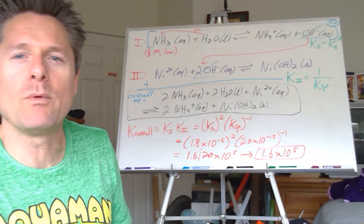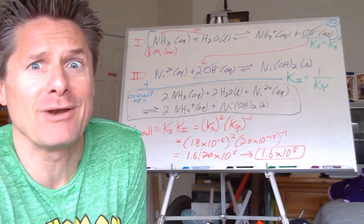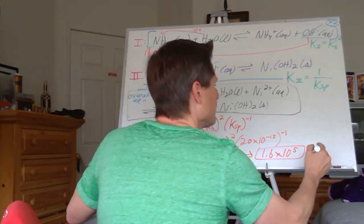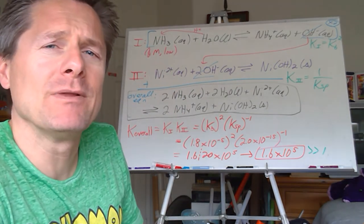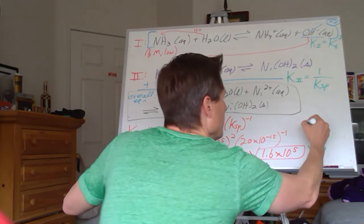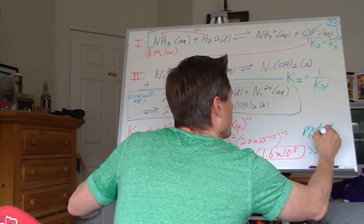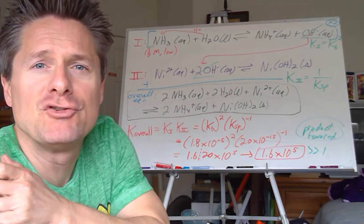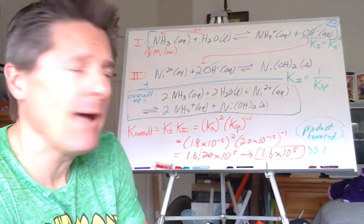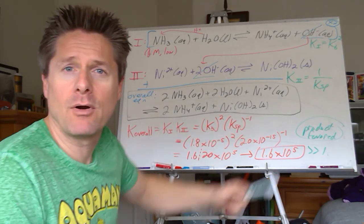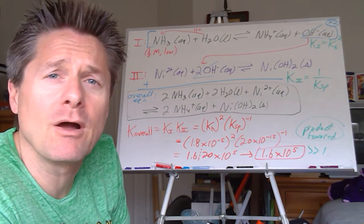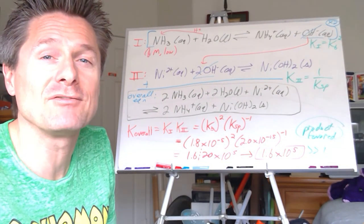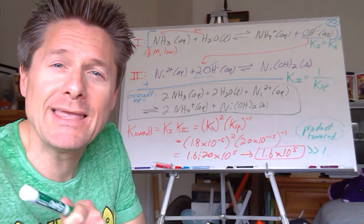1.6×10⁵ is not as dramatic as the 10³⁸ values we saw with complex ions, but it's still way bigger than 1 — very heavily product-favored. So if you took some nickel(2+) nitrate solution and added 1 molar ammonia to it, you'd expect to see particles form. The color of those particles we can't predict until we finish chapter 24 on complex ions. Practice these calculations — we'll do a lot of this in the equilibrium reactions lab.